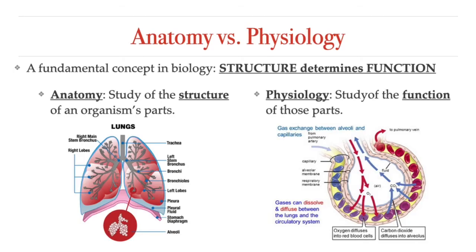Let's start with a fundamental concept in biology: the direct relationship between the structure of a body part and the way that it functions. When we study the human body, it is important to study both its anatomy and its physiology so that we can relate the form of the structures we are studying to their function. Anatomy is a scientific study of the body's structures — what they look like and their location in an organism — while physiology is all about the function of those body parts and how they work to keep us alive.